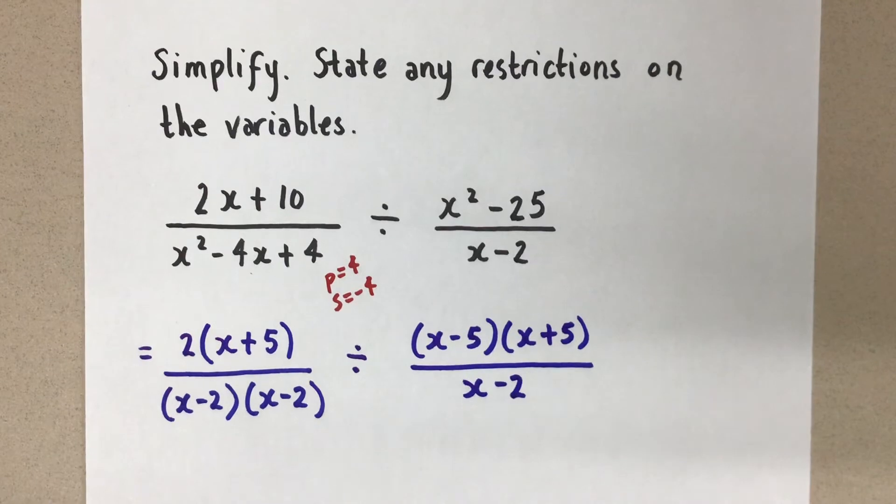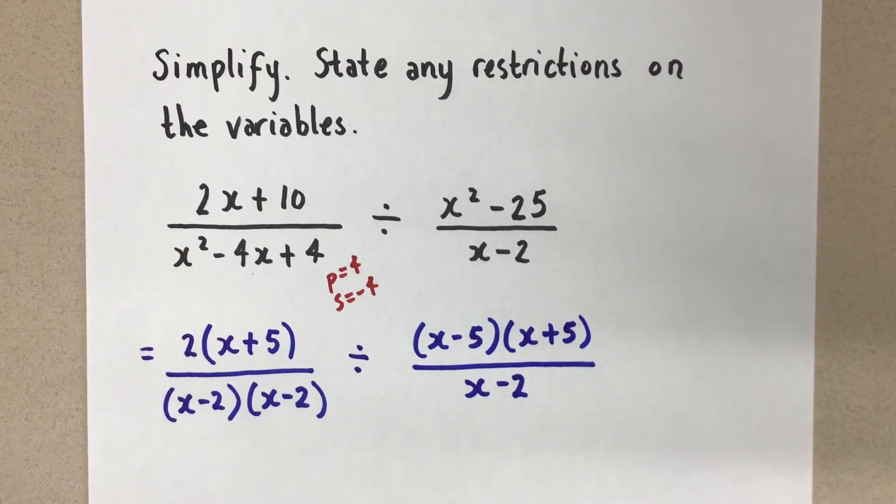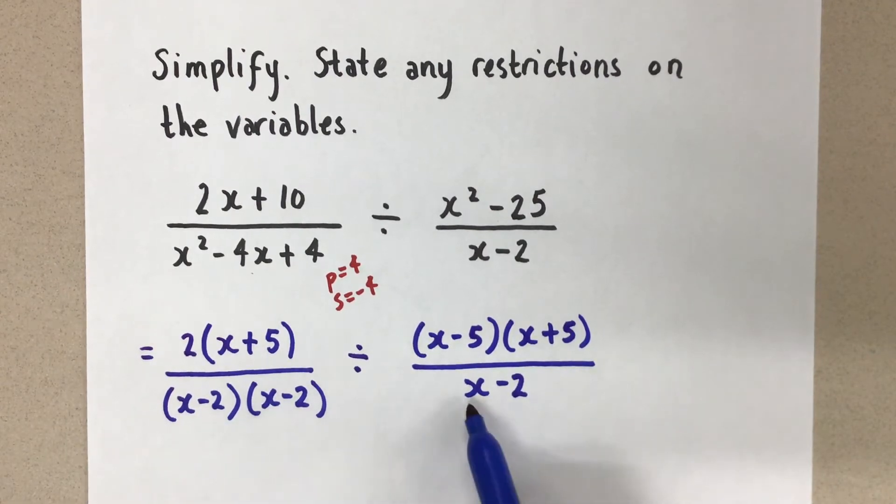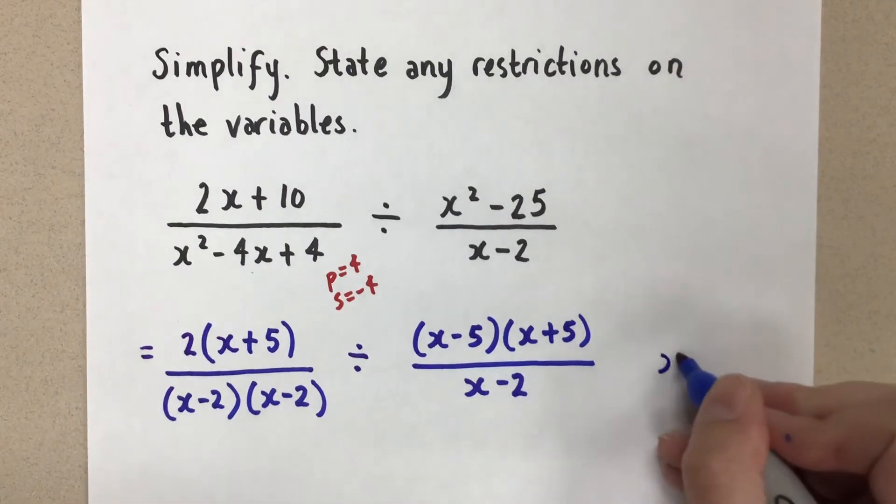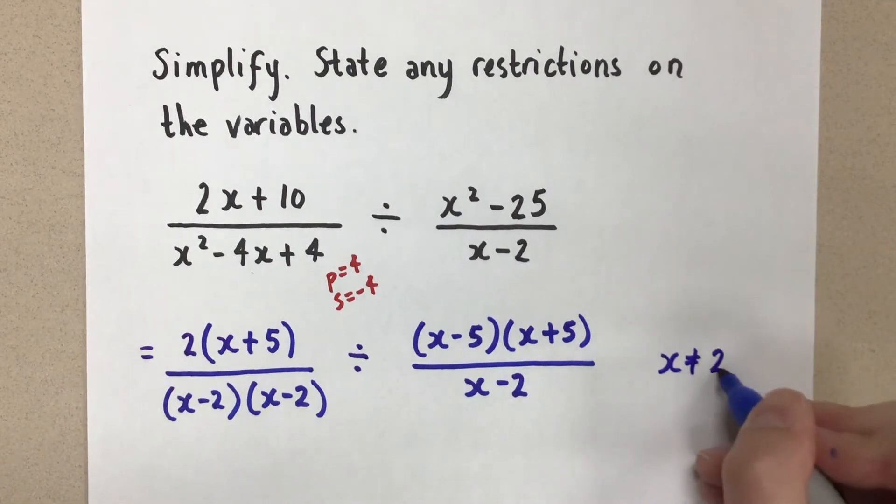Let's stop here and do our restrictions right away before we forget, before we move on. Now, denominators can't be equal to 0, so the restrictions come from the values of x that make each factor in the denominator equal to 0. Here we have positive 2, positive 2 again, and positive 2 again. Okay, that's great. So x can't be positive 2.